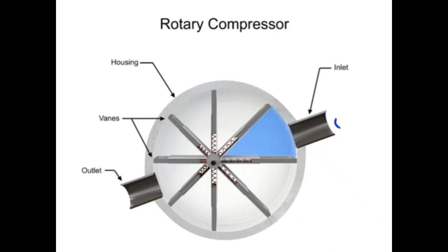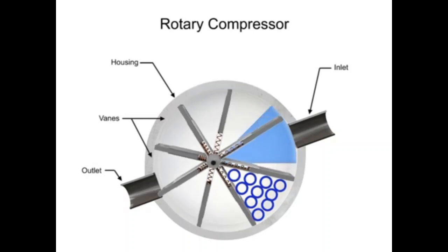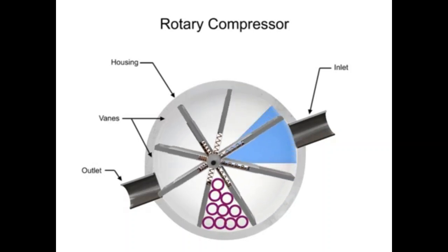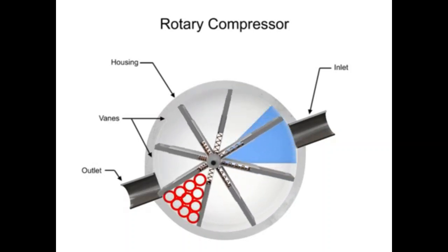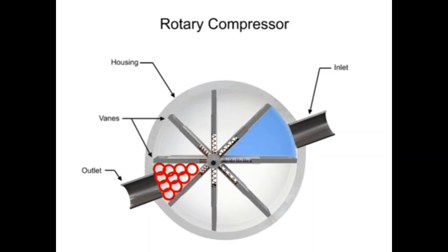Air enters at the largest chamber. As the vanes rotate, they retract, causing the chamber to get smaller and compress the air. Air exits at the smallest chamber.